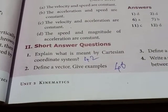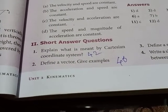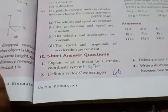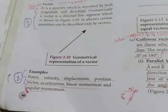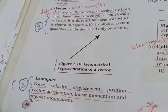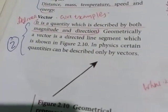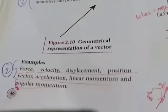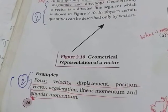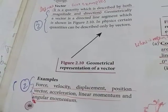That is short answer question number 1, on page number 42. Question number 2: define a vector and give examples. You can see the answer on page number 46. A vector is a quantity which is described by both magnitude and direction. Examples: force, velocity, displacement, position vector, acceleration.